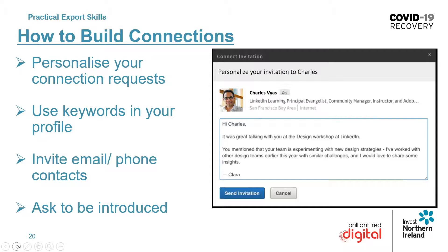On your profile you'll get suggested people to connect with and a little connect button at the bottom, but if you don't know the person I wouldn't recommend connecting that way — they'll just get a generic notification and are likely to say no. Instead, click into the individual's personal profile, then click connect, so you can send them a personalized message like the one here.